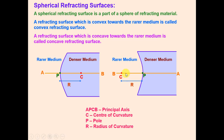Similarly, here the principal axis and pole are shown. The center of curvature is located by completing the sphere in this direction. R is the radius of curvature.